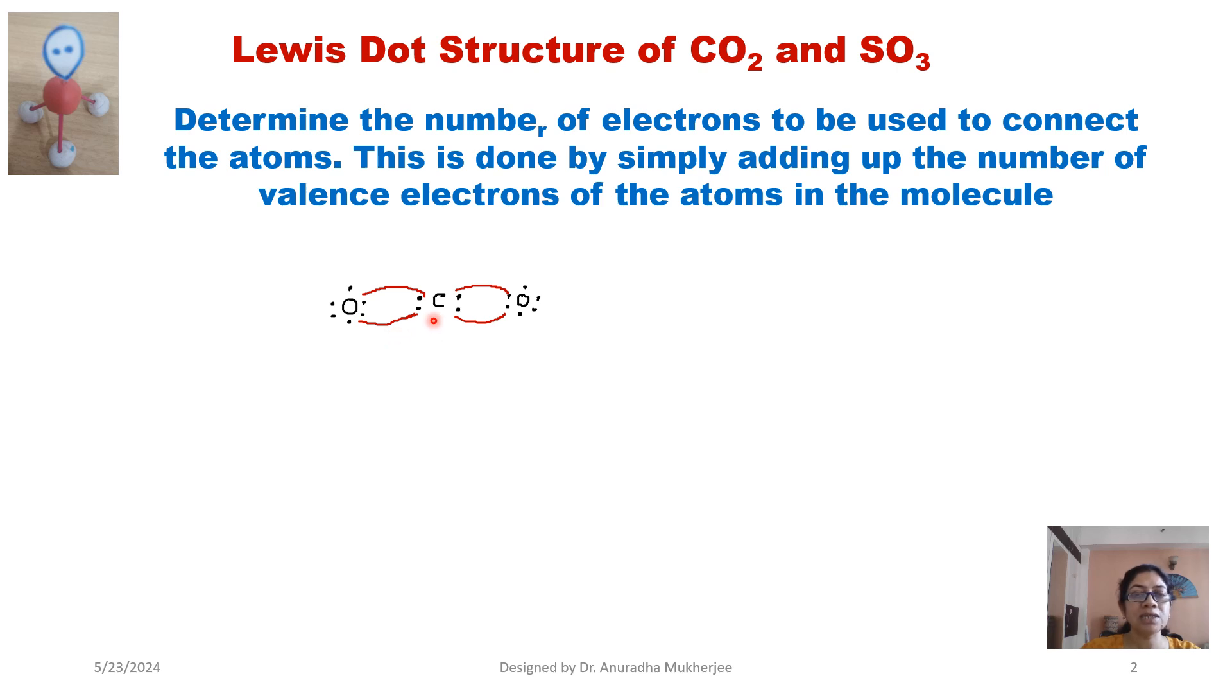So that's why here we can see carbon octet is fulfilled: 1, 2, 3, 4, 5, 6, 7, 8. Similarly, oxygen octet is also fulfilled. Now carbon is making double bond with the oxygen. So it's a CO2 molecule. It is linear in structure.